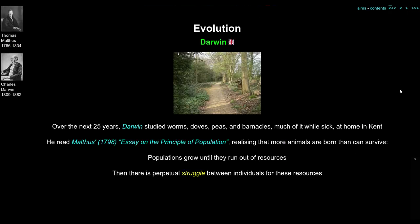He made an awful lot of notes and took a lot of specimens home. Then he sort of waited for 20 or 30 years. He was quite sick, spending a lot of time at home in Kent being looked after by his cousin and wife, Emma Wedgwood. During that long time, he studied worms, doves, sweet peas, barnacles, lots of different things, trying to formulate his ideas on evolution and how he might tie it all together.